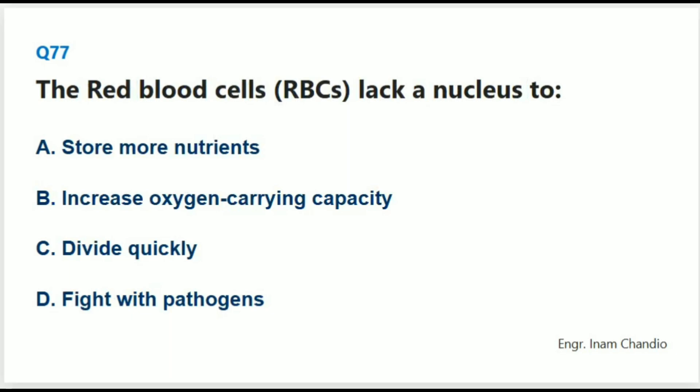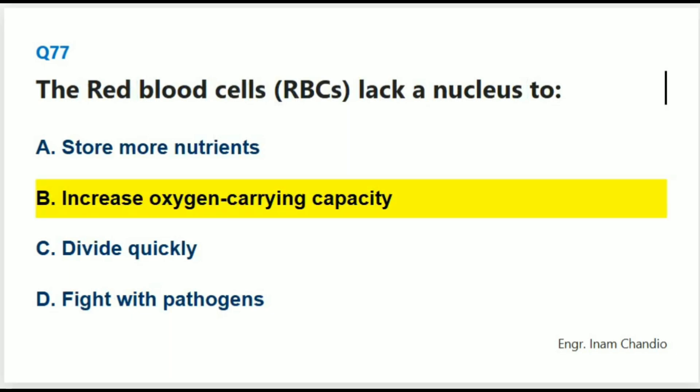The red blood cells (RBCs) lack a nucleus. This is because: The correct answer is B. To increase oxygen-carrying capacity.